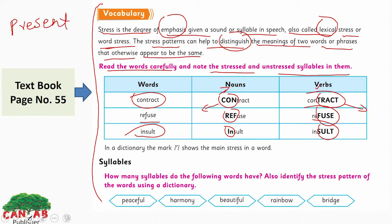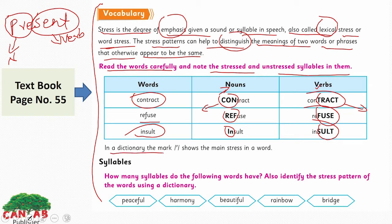Let me give you some more examples. Here is the word 'present.' Can you find out the verb and the noun here, and the stressed syllable in both categories? Yes — 'pre' is the stressed syllable in the noun form, and 'sent' carries the stress in the verb form.